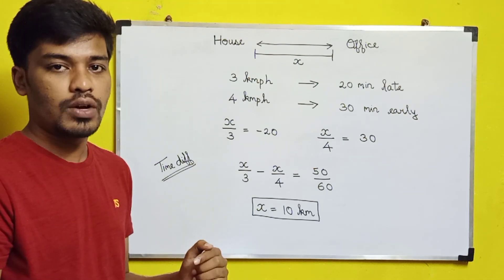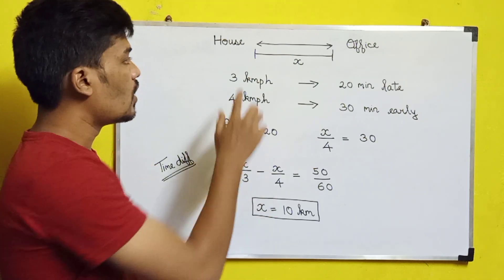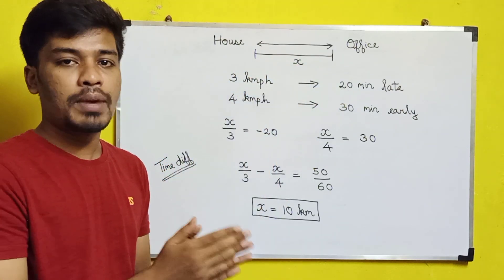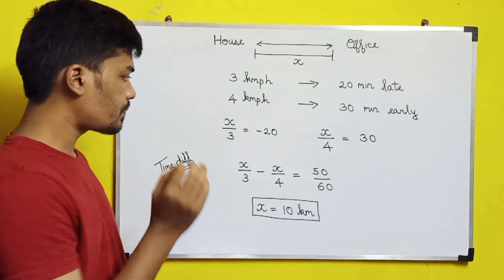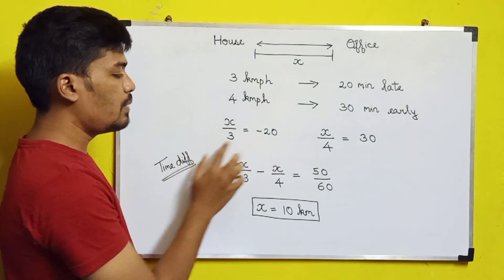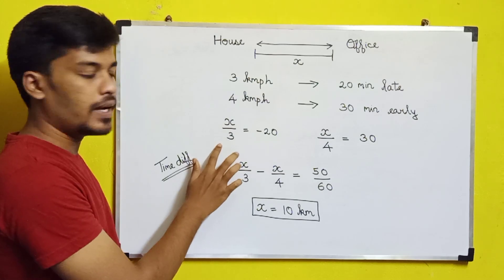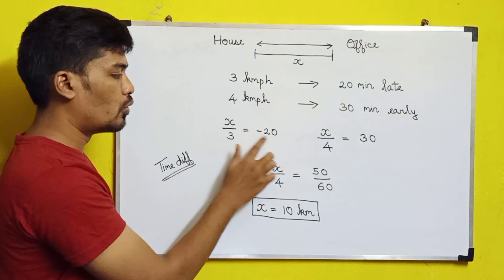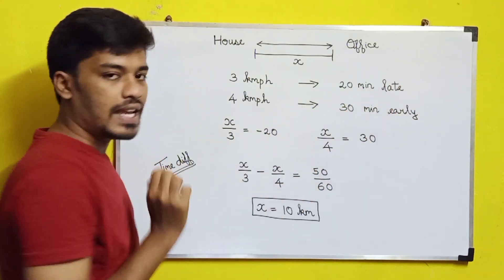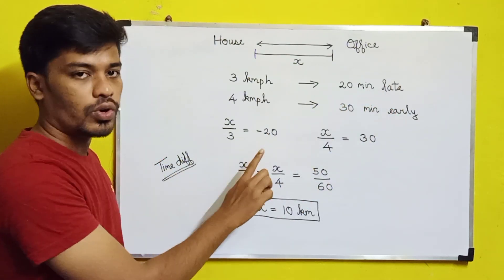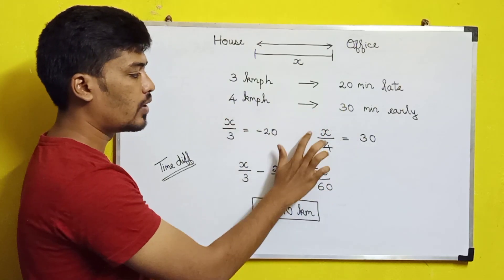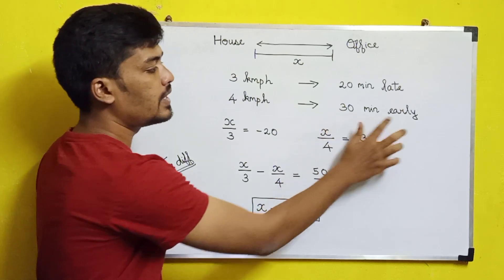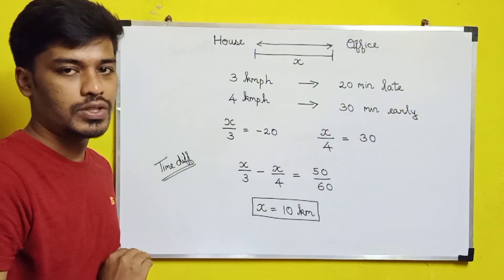So what we want to find out is the office distance from the house. We use the formula: Time = Distance / Speed. Let distance be x. At 3 km/hr the time gives 20 minutes late (negative sign), and at 4 km/hr the time gives 30 minutes early (positive sign).